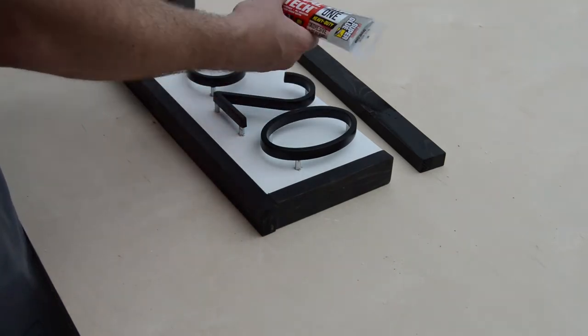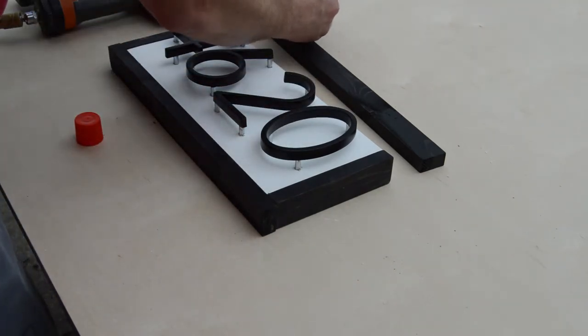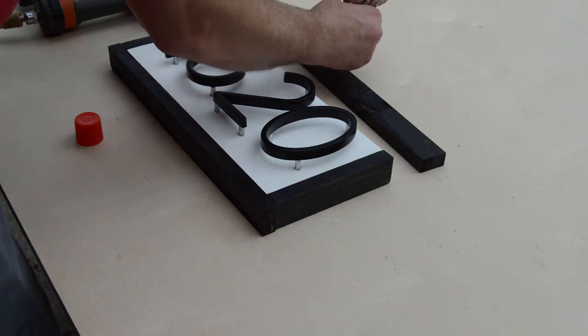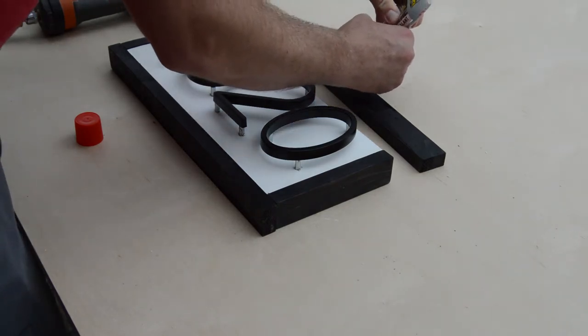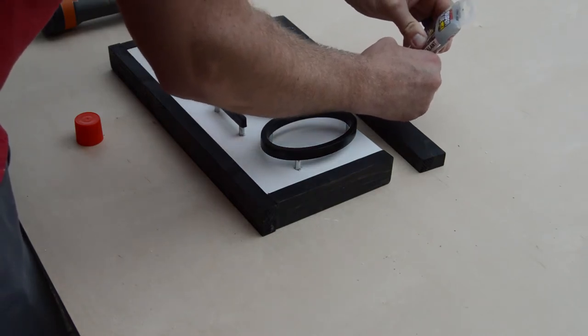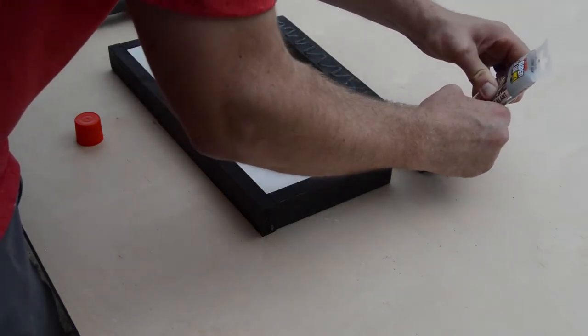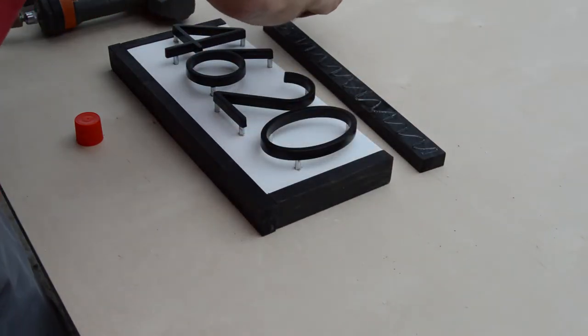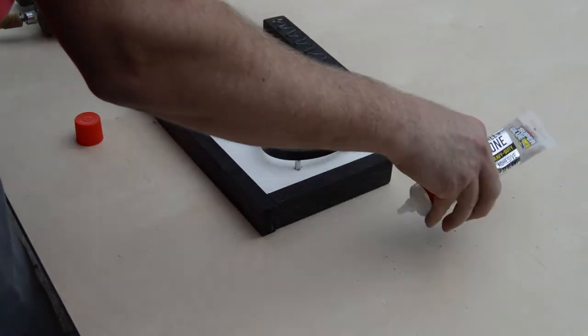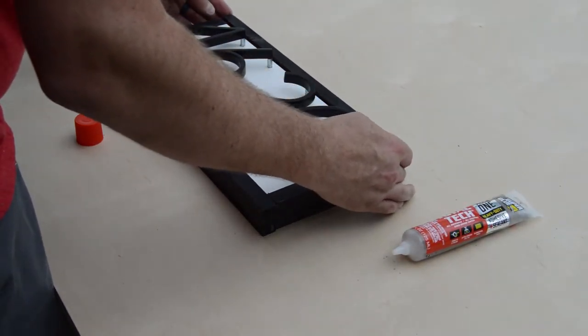So this frame was super easy. I stained a black finish on it. I allowed it to dry for a day before messing with it. And then just using the total tech adhesive, make sure I put a really good bead on there. Followed it up with a couple 18 gauge brad nails just to hold everything into place. And now we have a finished number plaque.